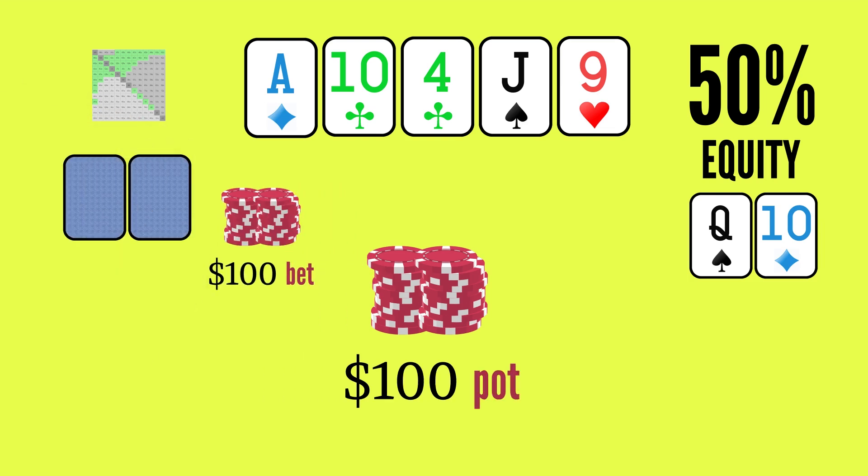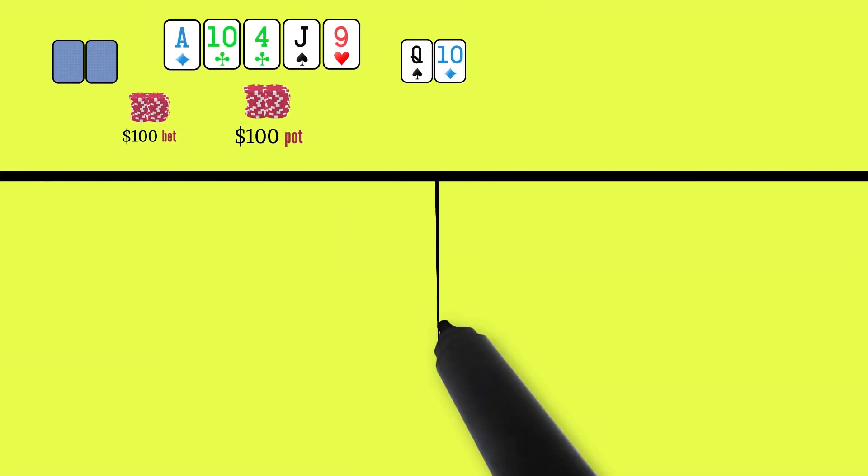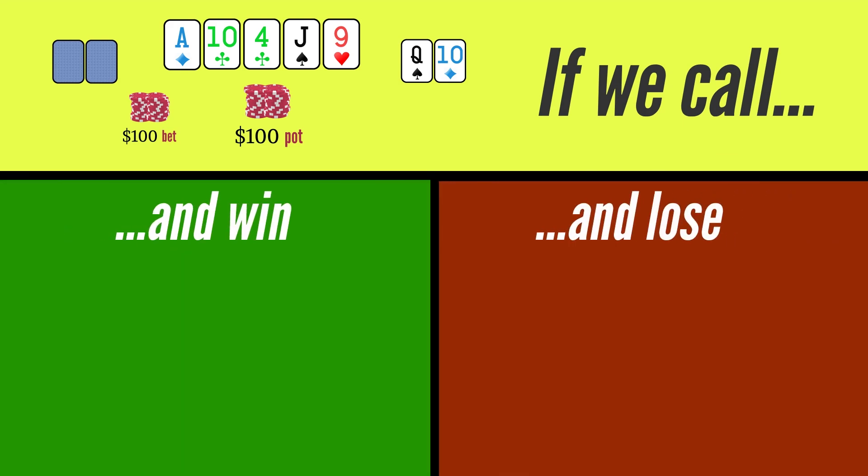There's a hundred dollars in the pot and our opponent bets a hundred. Should we call? Let's calculate the answer. First, we list the two potential outcomes if we call: we call and win, or we call and lose.